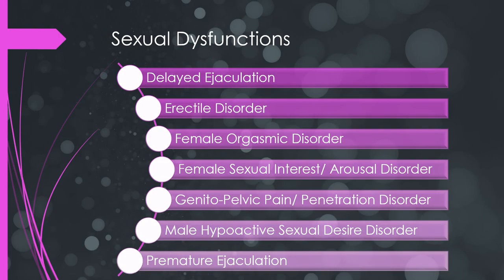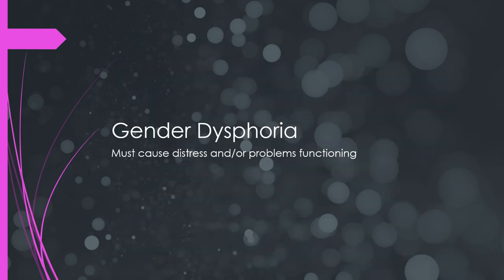There is also a category of sexual dysfunction — including erectile disorder, premature ejaculation, orgasmic disorders, and sexual interest and arousal disorders — some of which are controversial. Gender dysphoria has also had controversy about whether it should be included in the DSM given changing cultural attitudes and increasing acceptance of gender-fluid individuals. The key criteria for gender dysphoria is that it must cause distress and/or problems in functioning.